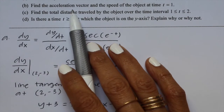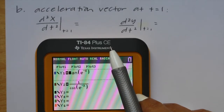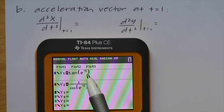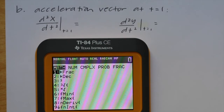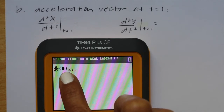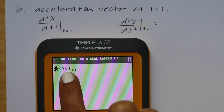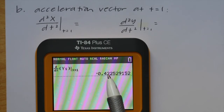Part B: Find the acceleration vector and the speed of the object at time t equals 1. For the acceleration vector, we need the second derivatives at t equals 1. We currently have y1 as dx/dt and y2 as dy/dt. Using the derivative function (math 8), we take the derivative of y1 and evaluate at 1, getting negative 0.42253.